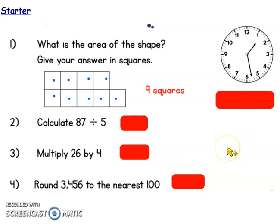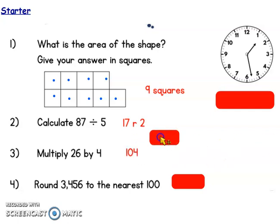Number two was a division. You could have done your bus stop method, brain only, place value grid method, or a number line. Whatever you chose, your answer should have been 17 remainder two. Well done if you got that right. Number three: multiply 26 by four. I hope to see some column method multiplication in your books for this one. The answer was 104.